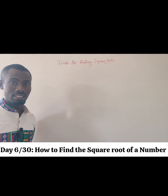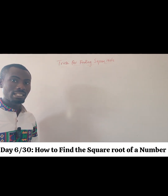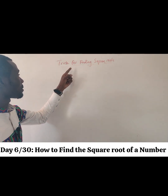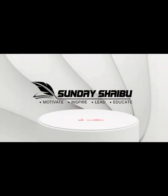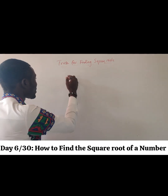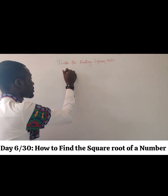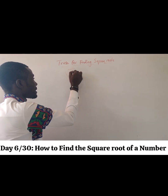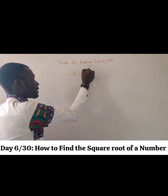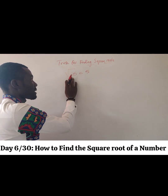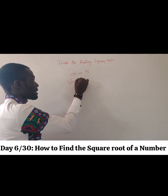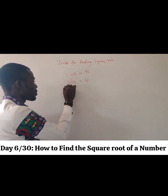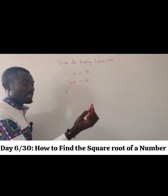Hello and welcome to class. In today's class I'll be sharing a simple trick for finding square roots. It is easy for us to find square roots of numbers like 25 — the square root of 25 is 5, and the square root of 16 is 4. But what do we do when we need to find the square root of a number like 26 or 27?